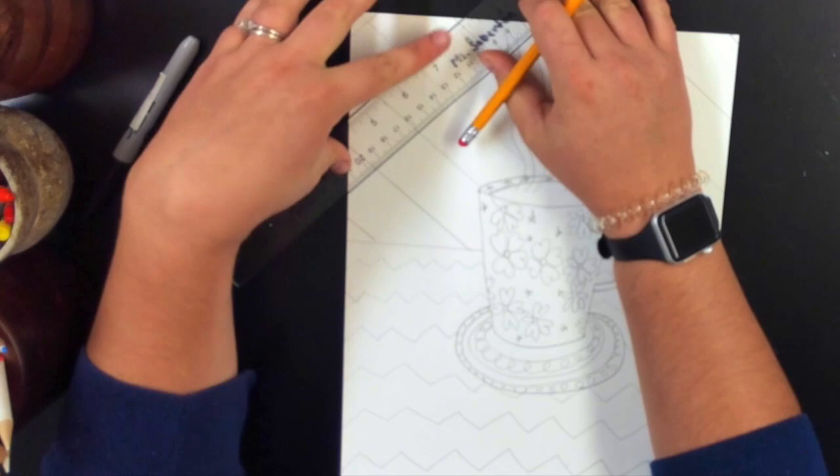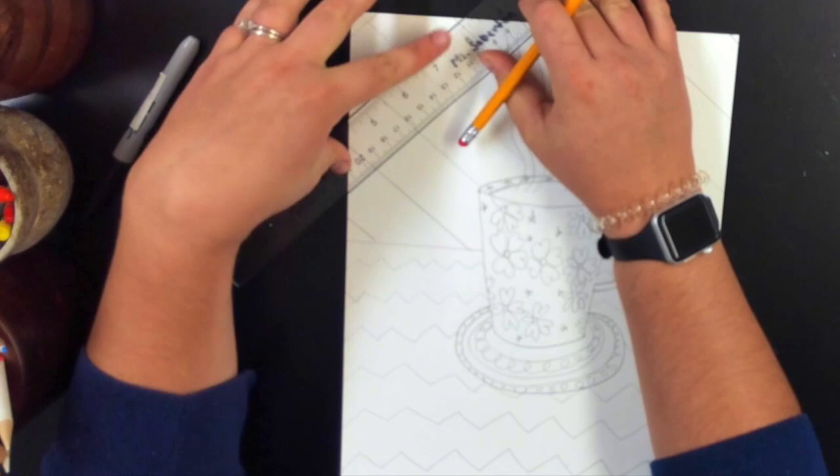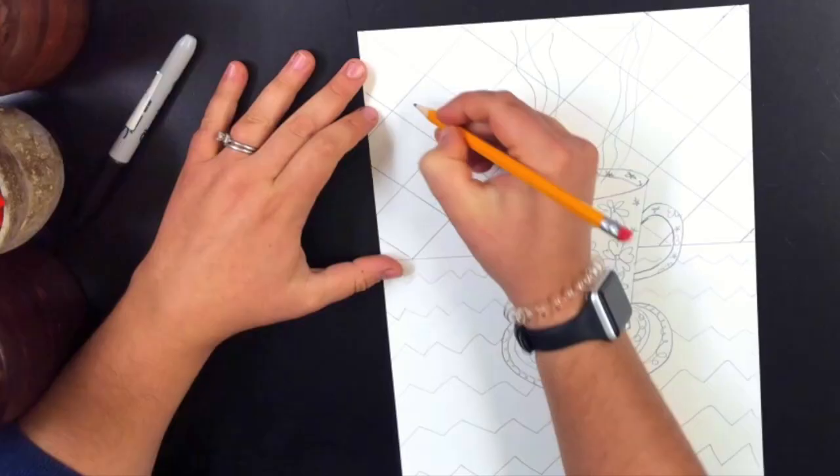I am decorating my mug with a flower star pattern. And my background, I am doing these diamond pattern shapes. And I am using a ruler. You could use a ruler or you could find something else straight that you can use as a straight edge. I am going in and adding more squares.